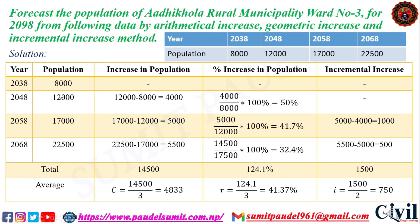The population values increase from the given data. We calculate the increase in population for first, second, and third intervals — which equals 5,000 minus 4,000, giving increases. The average increase equals 5,000. Now we find the connector value for population using the Arithmetical Increase method.